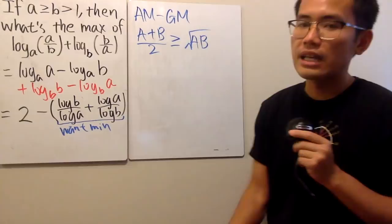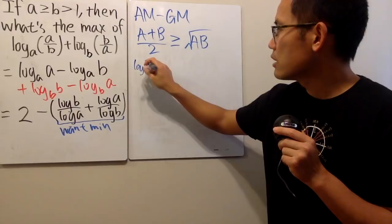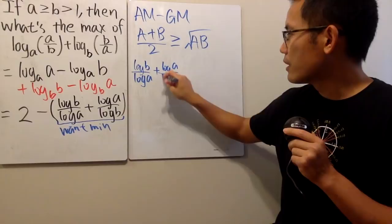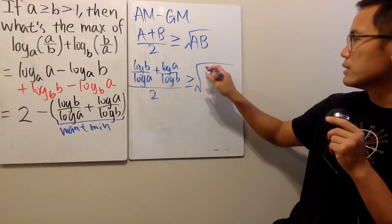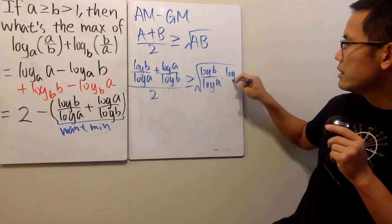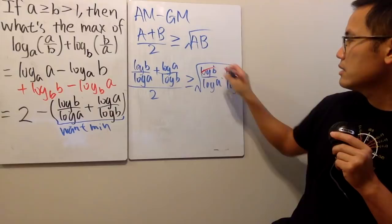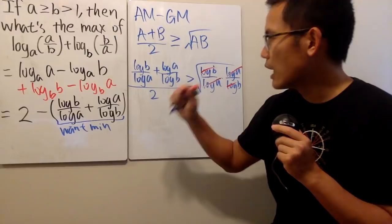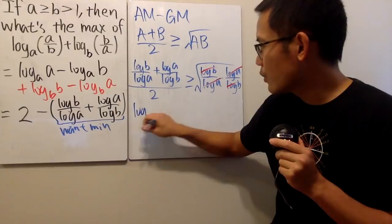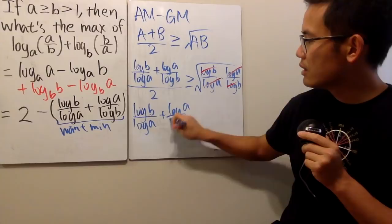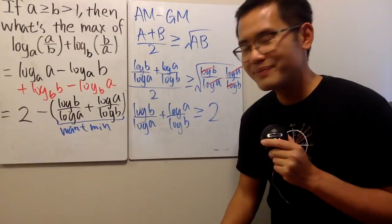We take this as capital A and this as capital B, and throw that in. So we see log B over log A plus log A over log B, all over two, is greater than or equal to the square root of this times that, which is nicely equal to 1, because this and that and this and that cancel each other out very nicely. So this over two is greater than or equal to one. In other words, multiplying by two on both sides, log B over log A plus log A over log B is greater than or equal to two.